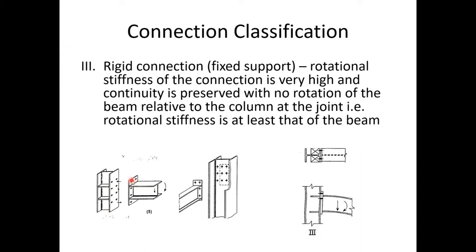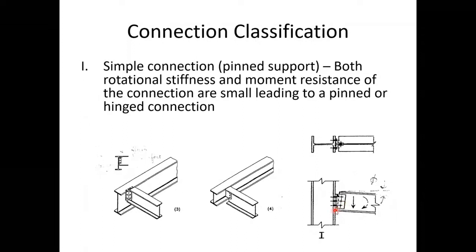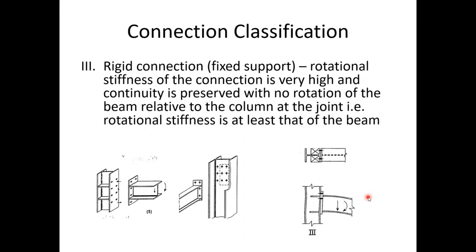A rigid connection provides full rotational stiffness. An extended end plate is welded to the beam and bolted to the column. When the beam tries to rotate, the bottom flange pushes against the plate and the top flange is held by bolts — preventing rotation. This gives a rigid connection. In the bending moment diagram, the flanges remain horizontal near the rigid support and deflect only further out. If you don't connect the flanges to the column, you can generally assume a simple (pin) connection.